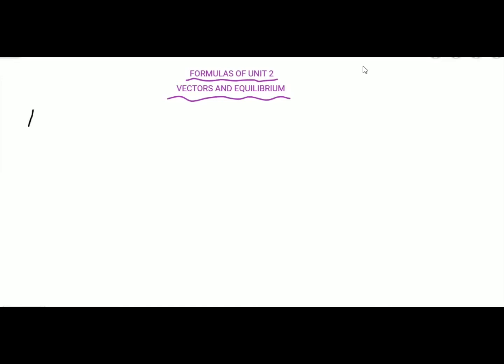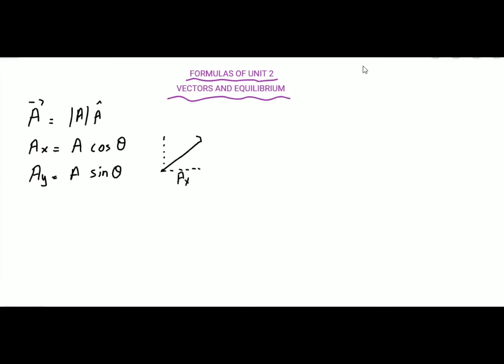First of all, in this unit we have learned about vector quantities. Vector quantities are those quantities which have both magnitude and a particular direction. A magnitude along with a unit vector gives rise to a vector quantity. We have also studied the splitting of a vector into its rectangular components: AX = A cos θ (the X component) and AY = A sin θ (the Y component).